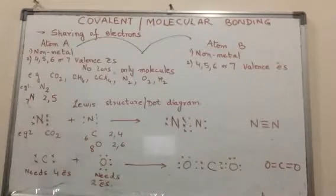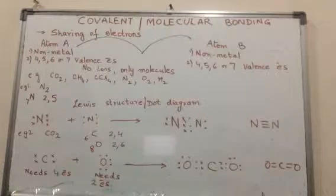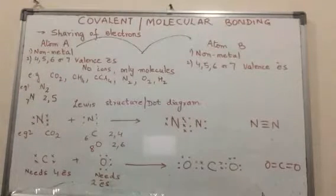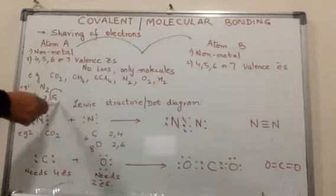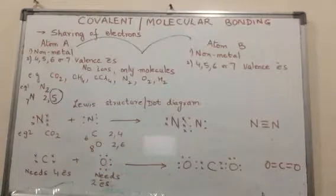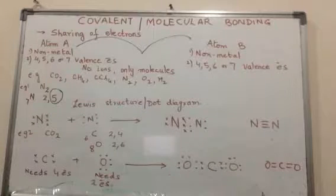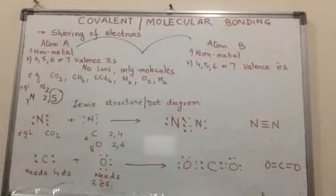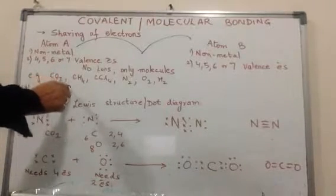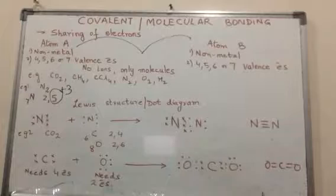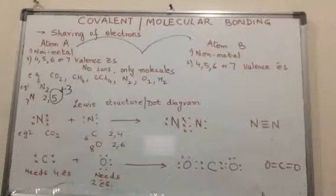The number of valence electrons is five. How many more electrons does nitrogen need to complete its octet? Five plus three makes eight. Each nitrogen atom needs three more electrons to have eight electrons in the valence shell.